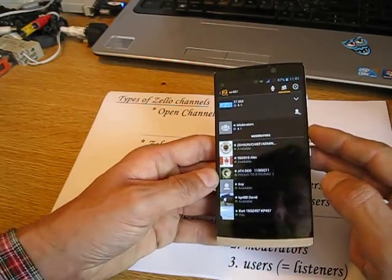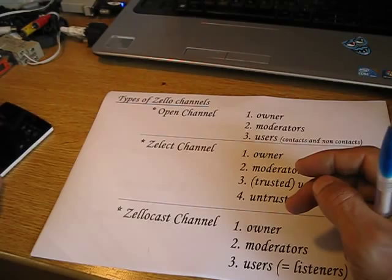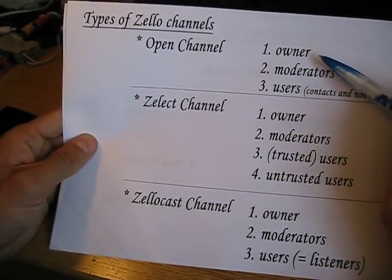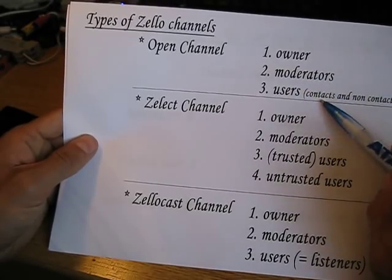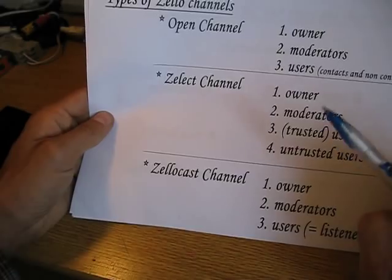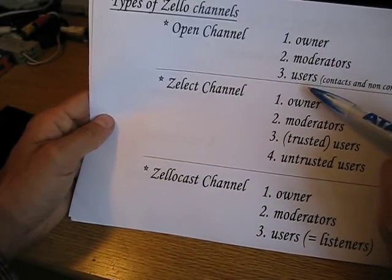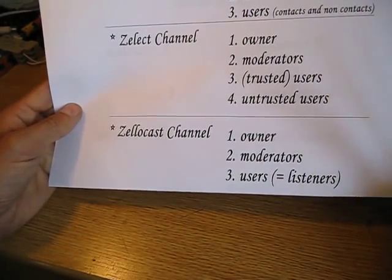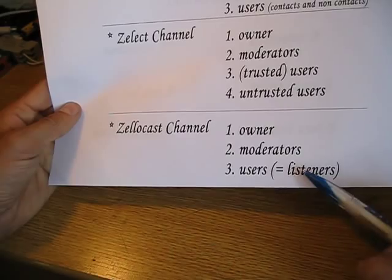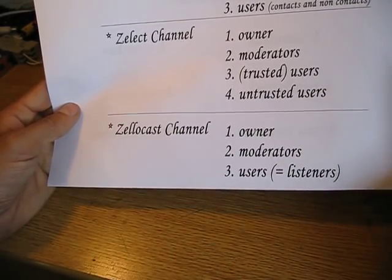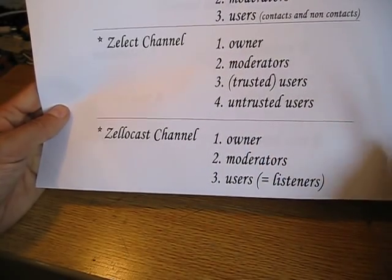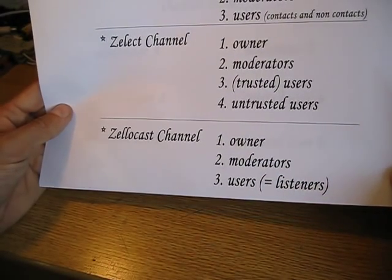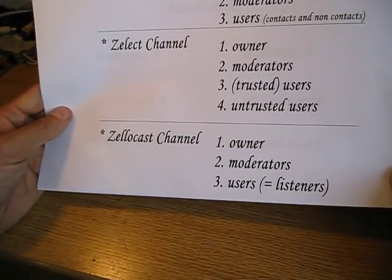In an open channel, you have three types of users: the owner, moderators, and users — which can be contacts or non-contacts — and everybody can talk. With ZelloCast, the same user types apply, but users become listeners. Only the owner and moderator can broadcast; the users' PTT key is greyed out so they can only listen.